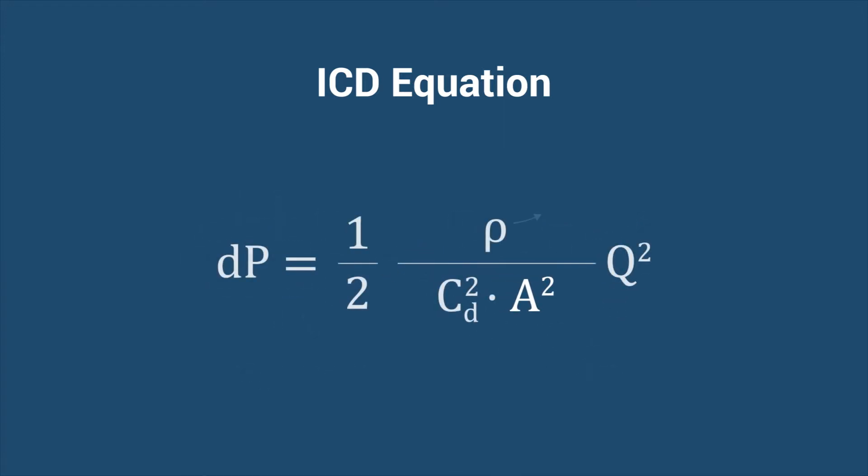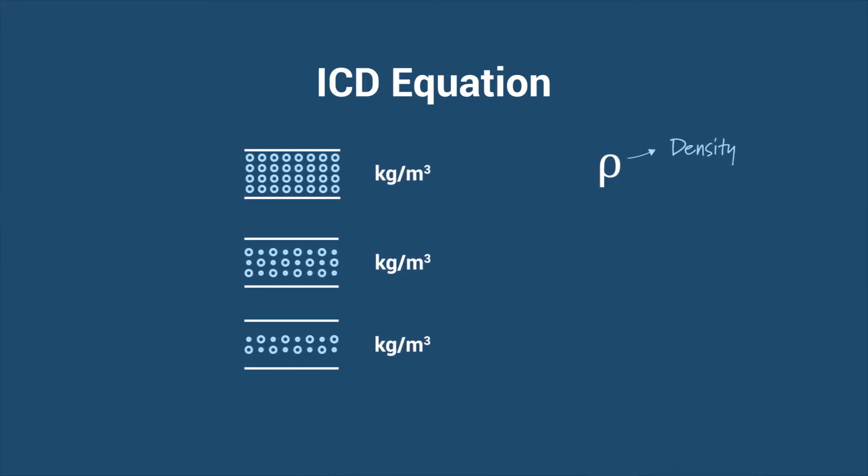The last function is rho, which signifies fluid density. This is in actuality the only fluctuating component of the equation. Density is measured in kilograms per cubic meter, and it will vary depending on the fluid flowing through the ICD, whether it's water, oil or gas, the density of which also depends on the reservoir temperature and pressure.